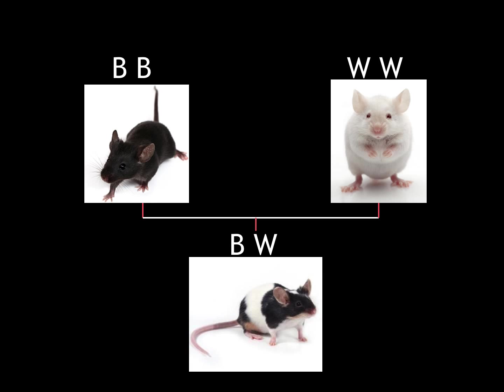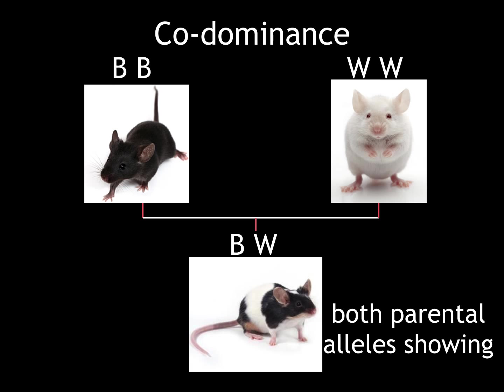Here we see codominance. We have a black parent mouse and a white parent mouse, and the offspring shows both parental alleles, meaning that each of the alleles is dominant and each will show up.